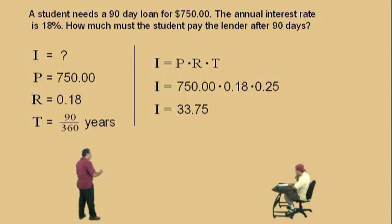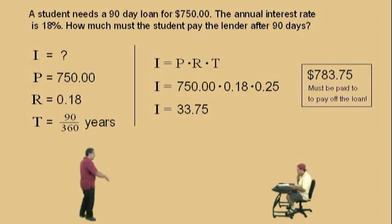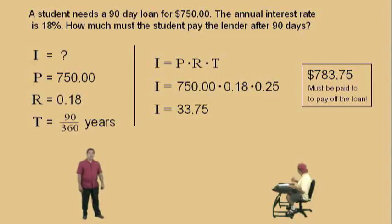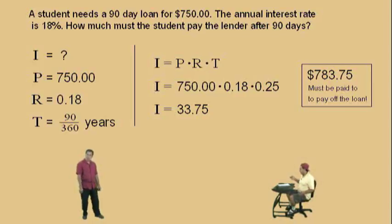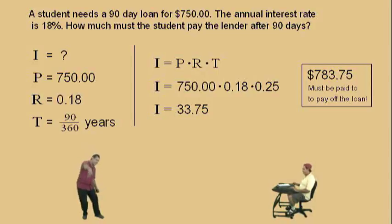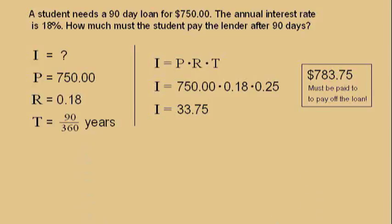The total amount the student has to pay after 90 days is $783.75. That completes our simple interest lecture — that was so much fun! I think it's time for us to take a break and relax. We'll see you all again soon. Bye!